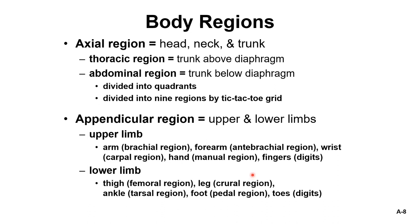Now we need to talk about the body regions. You have your axial region, which includes your head, neck, and trunk. The trunk above the diaphragm makes up the thoracic region, and the trunk below the diaphragm is the abdominal region. You also have the appendicular region, which includes upper and lower limbs.